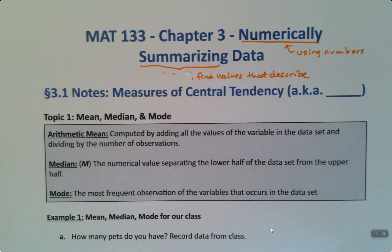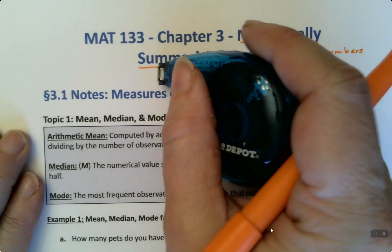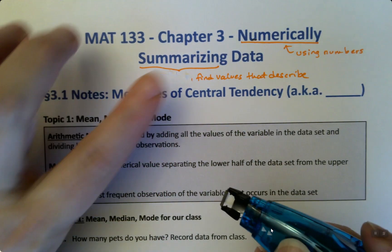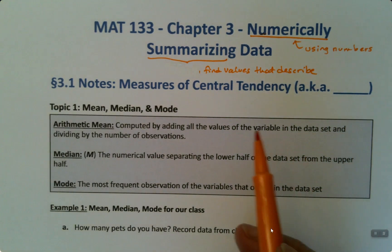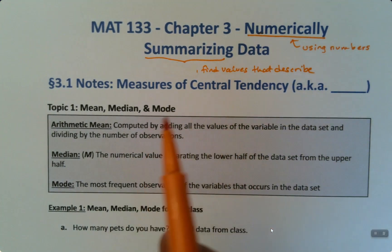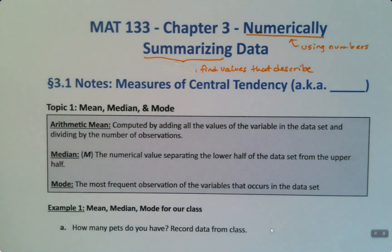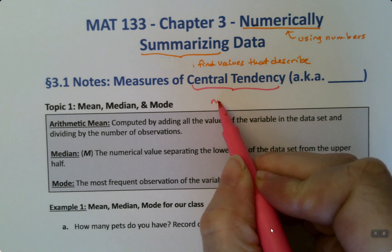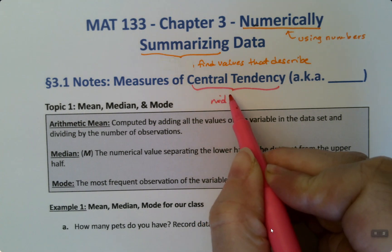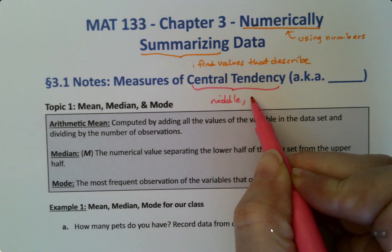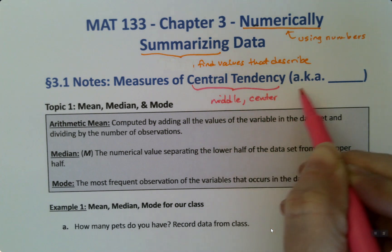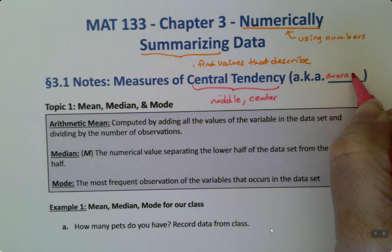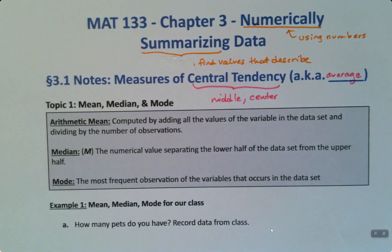The first one we're going to begin with is, in Section 3.1, we're going to find the measures of center, central tendency, which is a fancy way of saying the middle, the center. That's what we're going to find. Central tendency will be the middle, the center. In other words, also known as the average. So when you hear average, you should think the middle, the center.